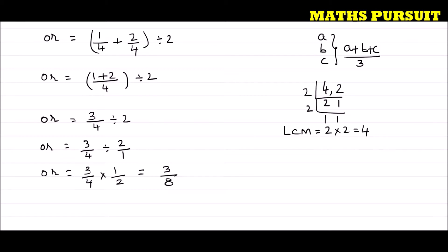We can confirm that 1/4 < 3/8 < 1/2, so 3/8 lies between 1/4 and 1/2. But the question asks for three rational numbers. We can find two more by finding the mean between 1/4 and 3/8, and between 3/8 and 1/2.